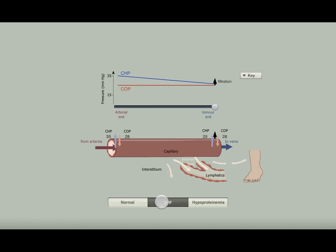The main difference is that in CHF, depending on the severity, venous pressures may rise, and you can see this reflected as a higher CHP at the venous end of the capillary. Looking at the graph and using the slider, you can see that filtration is favored along the entire length of the capillary.